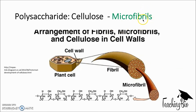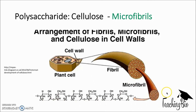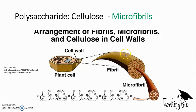Here are the microfibrils. Multiple chains run parallel to one another and together form microfibrils, and then all of them join together to form fibrils overall, which form the cell wall of a plant. So the hierarchy is: chains, then microfibrils, then fibrils, then cell wall.